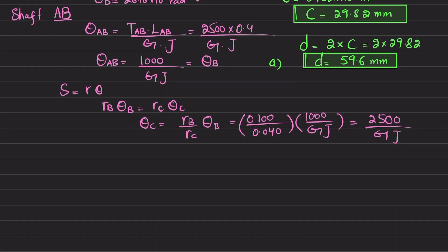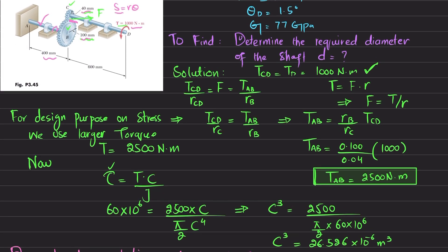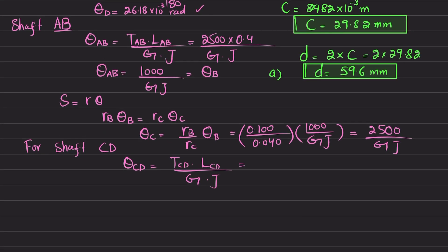For shaft C-D, the angle of twist is θ_CD = T_CD × L_CD / (G × J), where T_CD = 1000 N·m and L_CD = 600 mm = 0.600 m. This gives θ_CD = 600 / (G·J).